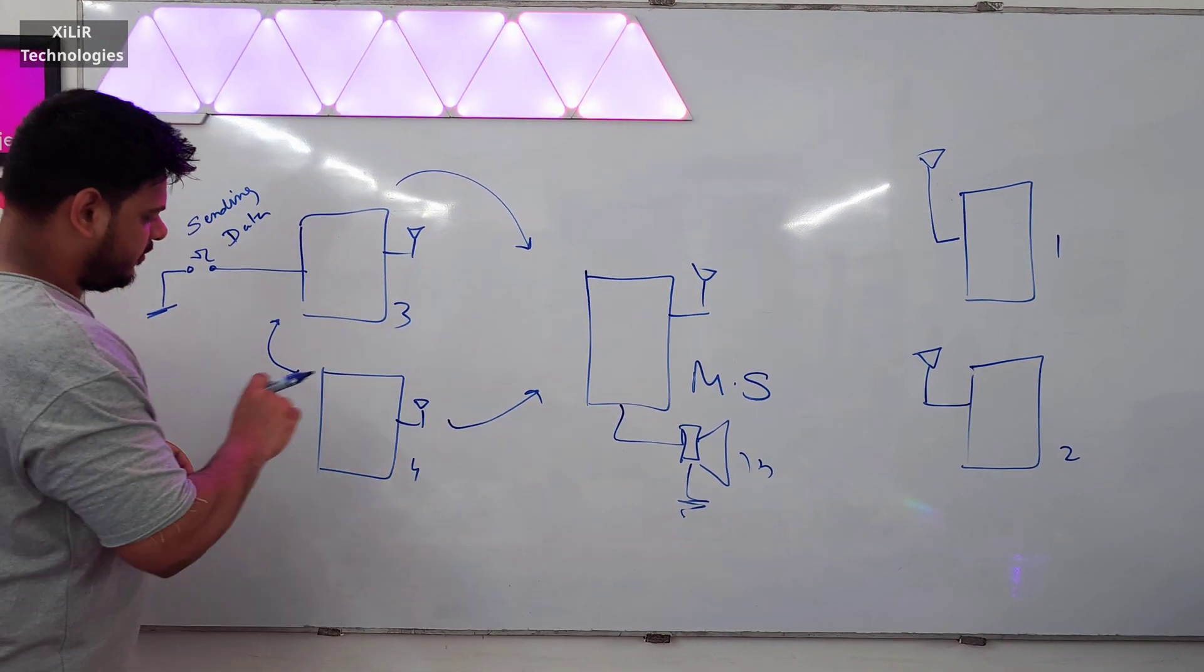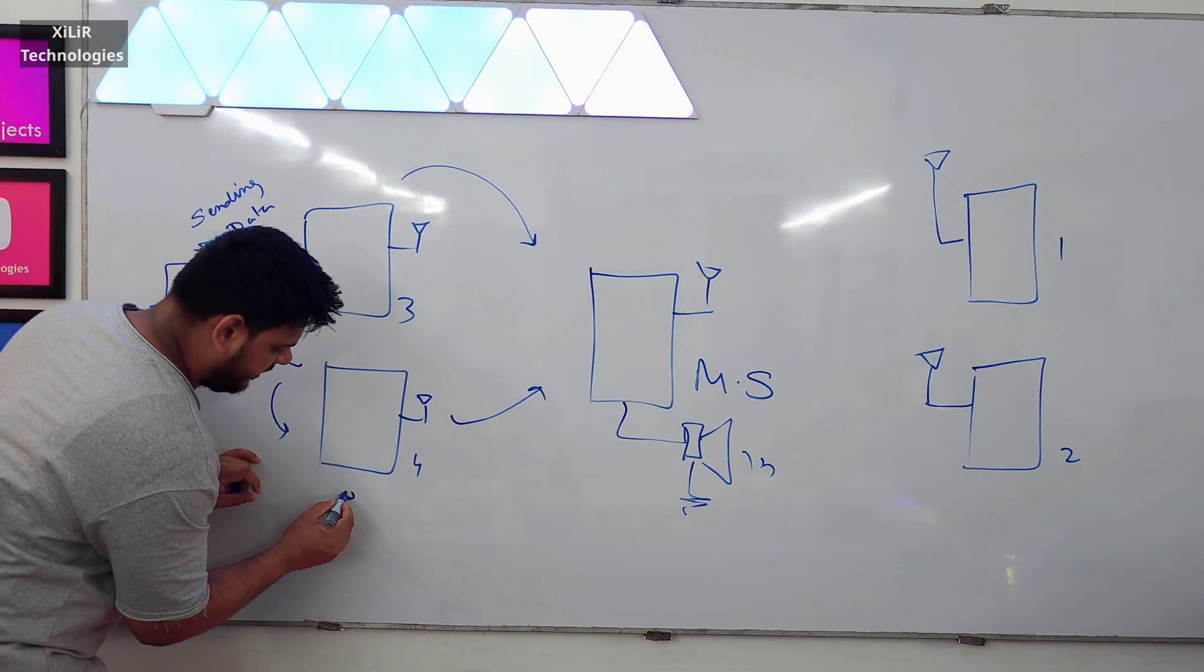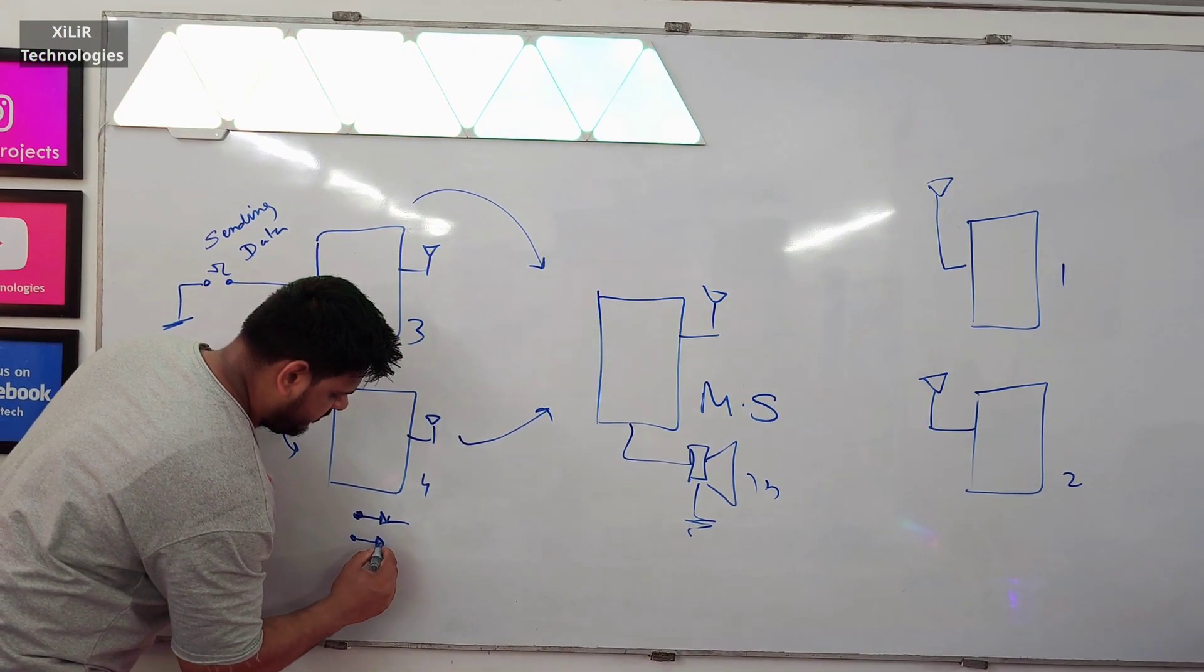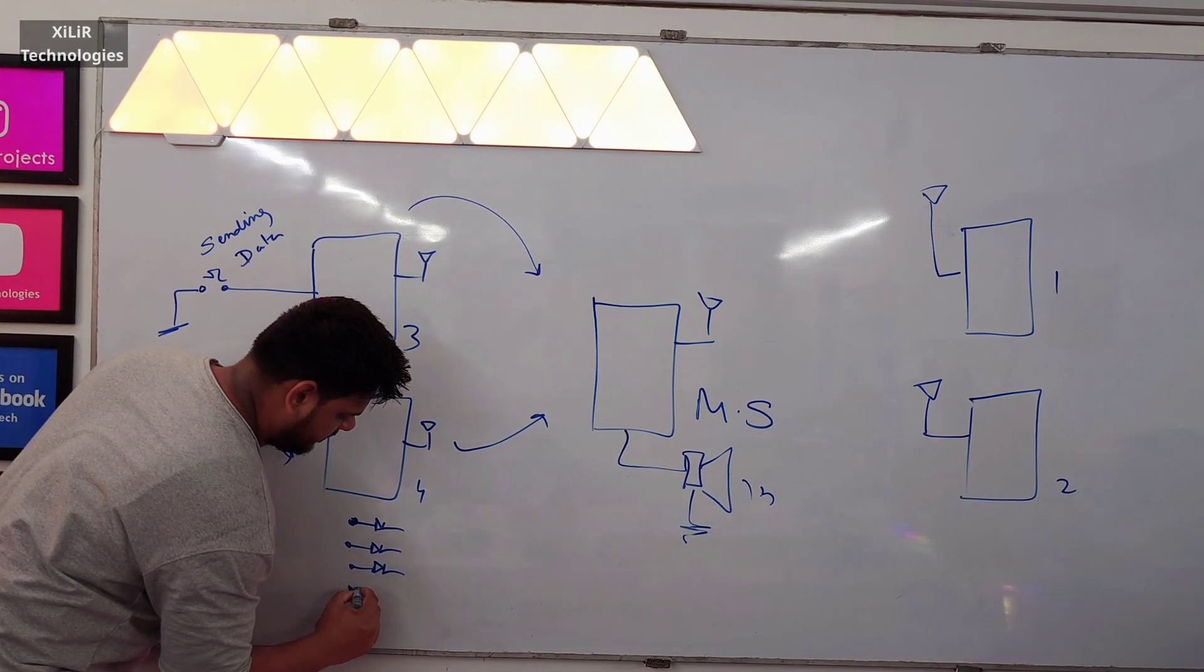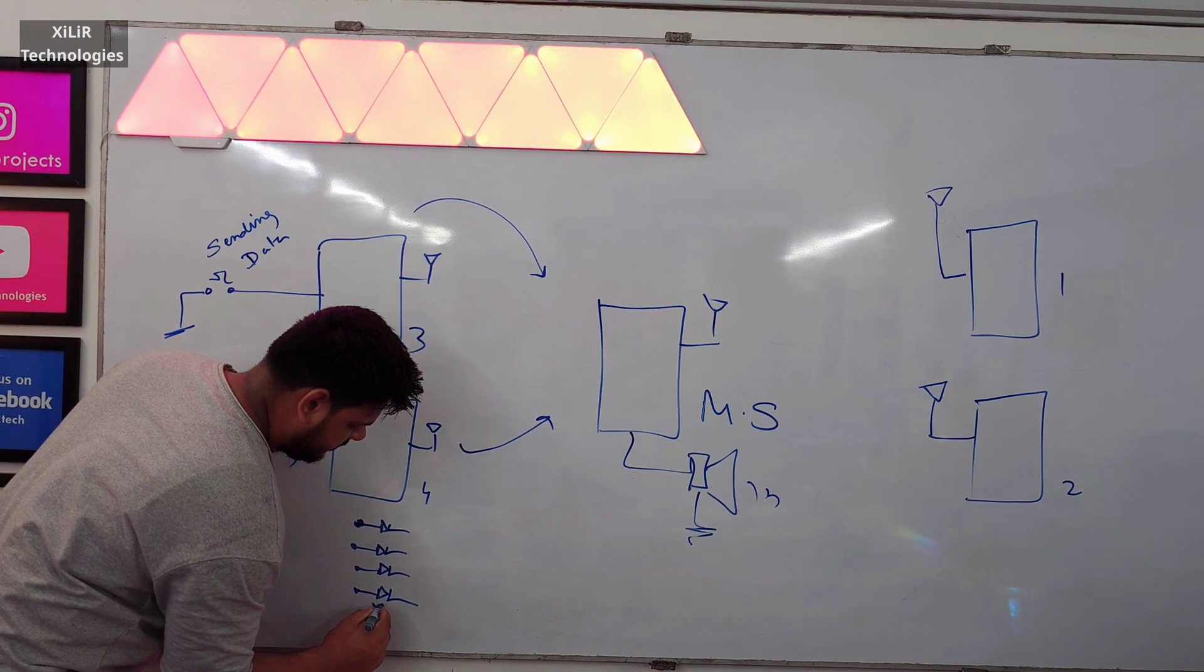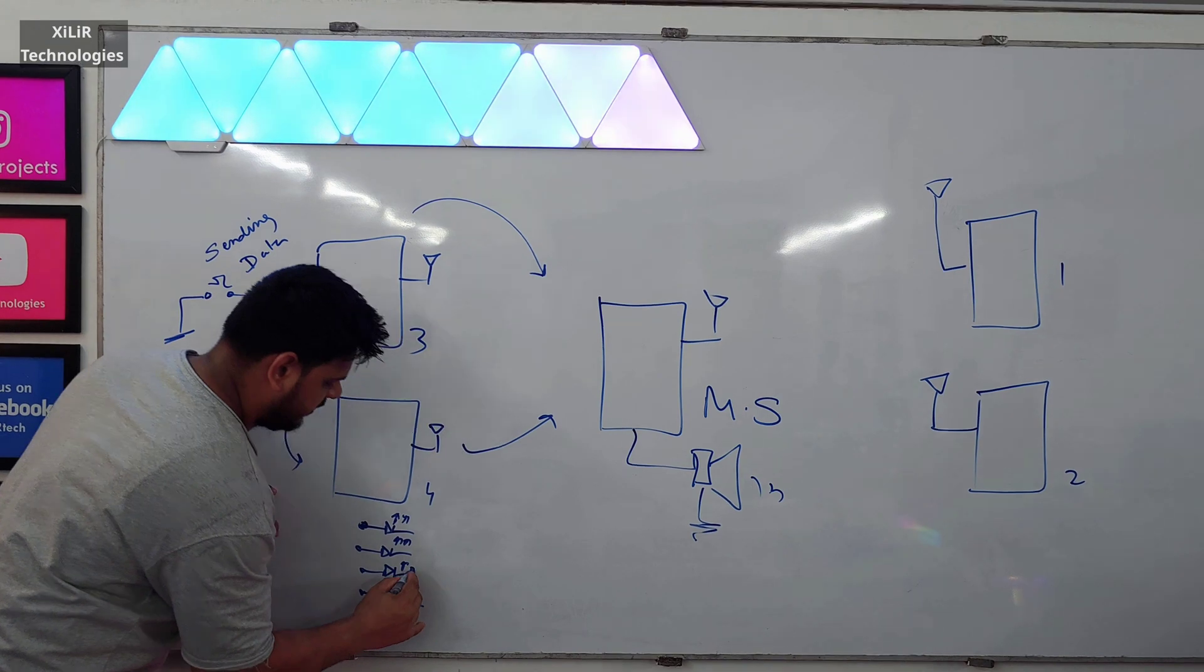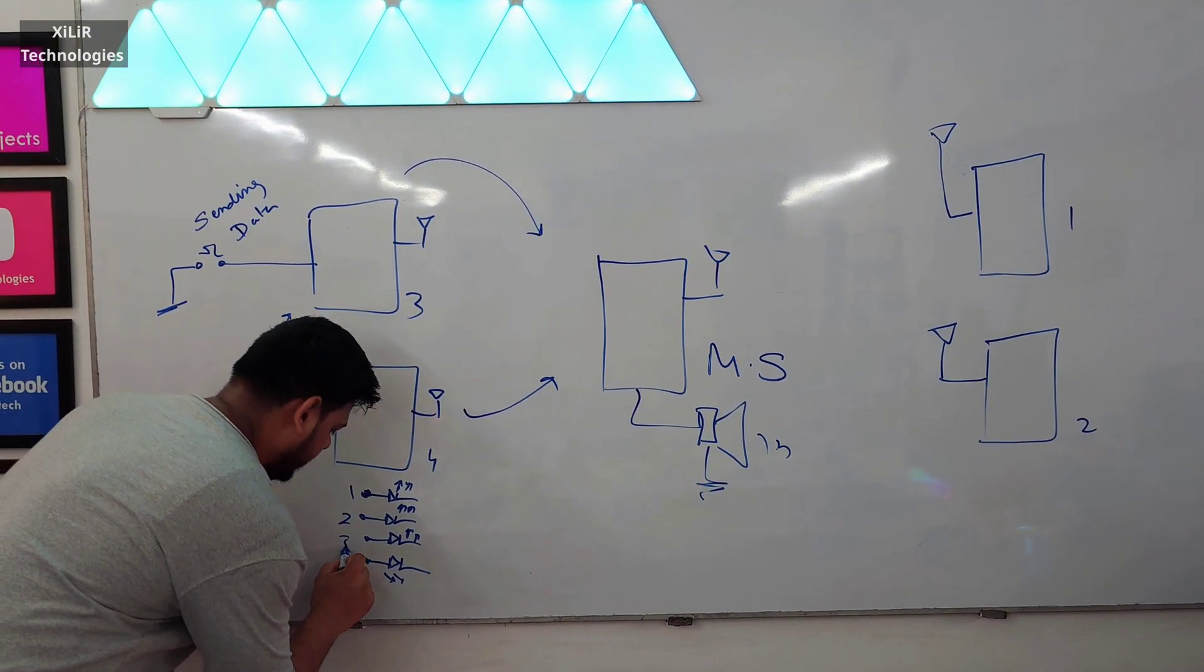When I press this one, the LED will be glowing. These are the connected LEDs. I am naming them 2, 3, 4.